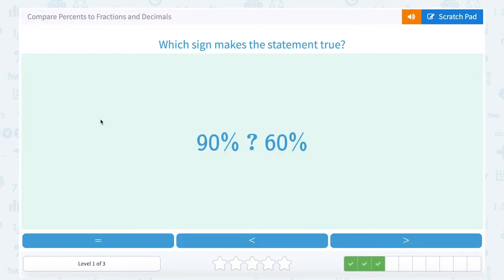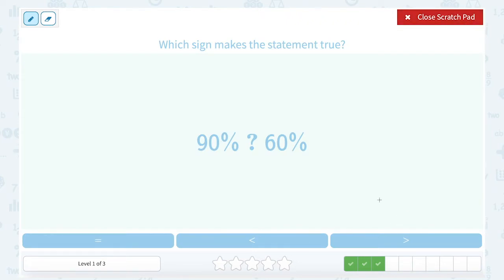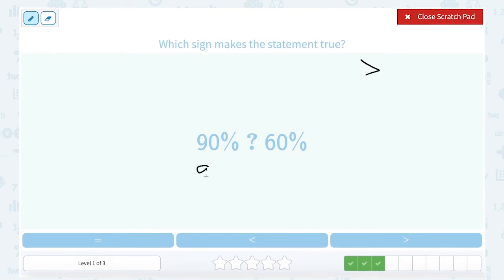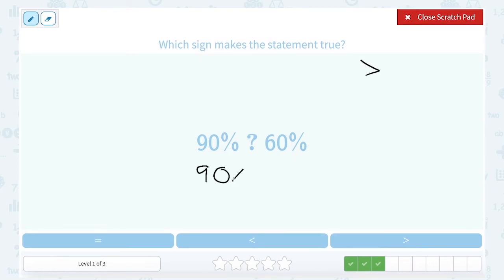90% and 60%. Well, 90% is more than 60%, right? 90% is most of, it's really close to the whole thing, whereas 60% is only a little more than half. So looking at our inequality symbols, this one means is greater than. So we would say 90% is greater than 60%.